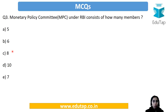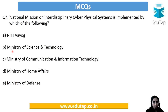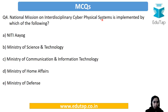An easy question: MPC under RBI consists of how many members? The answer is option B — that is, 6 members. Next: The National Mission on Interdisciplinary Cyber Physical Systems is implemented by which of the following — Niti Aayog, Ministry of Science and Technology, Communication and IT, Home Affairs, or Defense? The answer is option B: Ministry of Science and Technology, because the department under it is actually going to implement the mission.